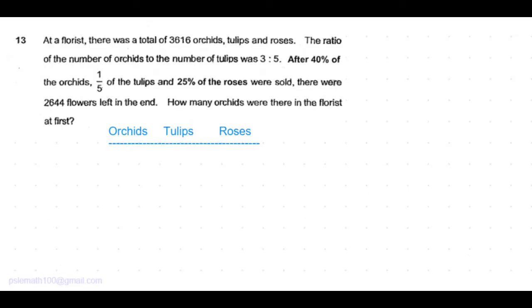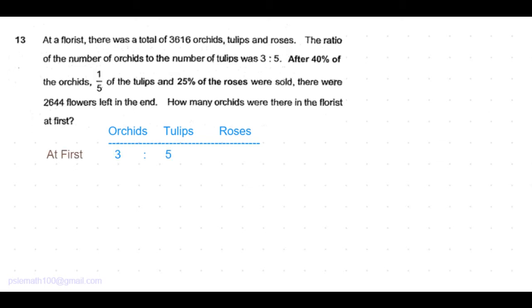Let's chart down orchids, tulips and roses. At first, the ratio of orchids to tulips was 3 to 5. After 40% of the orchids were sold, which means 40% of the orchids should be a whole number. If we assume the number of orchids to be 3 units, 40% of 3 units would end up in decimals.